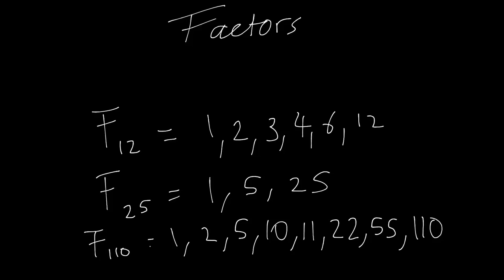Now, what are factors? Factors are essentially any number that divides exactly into another number with no remainder. For example, factors of 12 would be 1, 2, 3, 4, 6, or 12 itself, because if you divide 12 by any of these numbers you get no remainder. For 25, the factors of 25 are these three numbers — you get no remainder if you divide 25 by any one of them. And 110 also has its own set of factors.